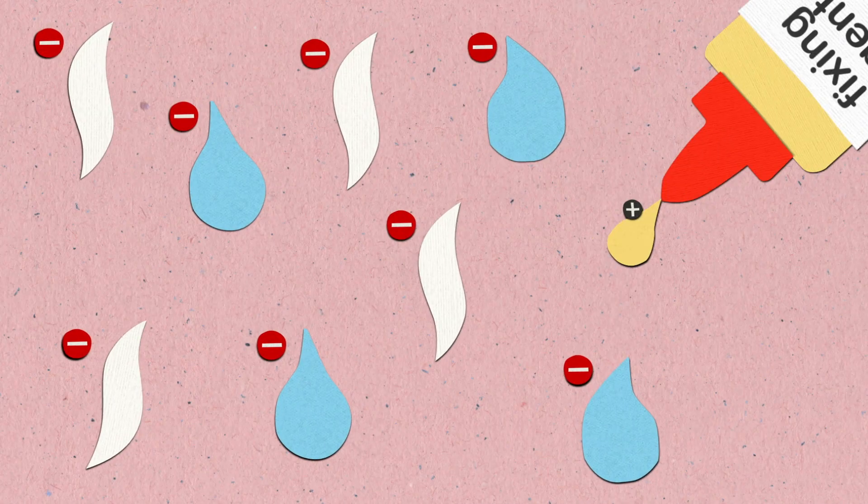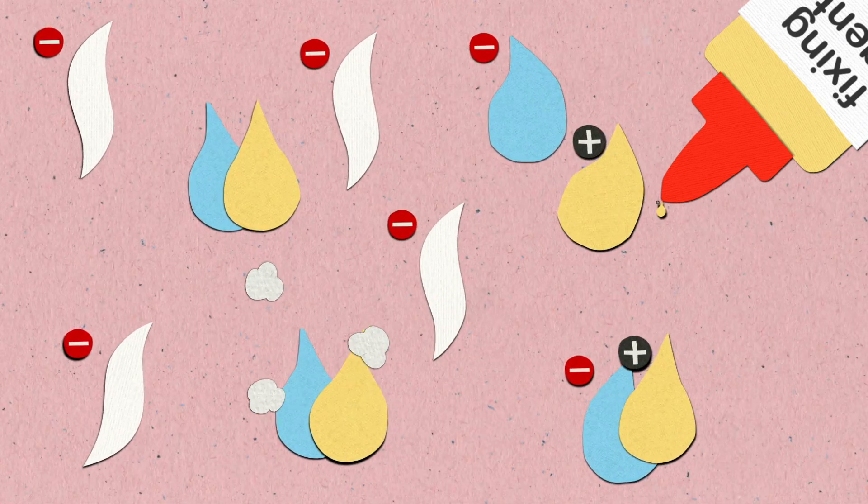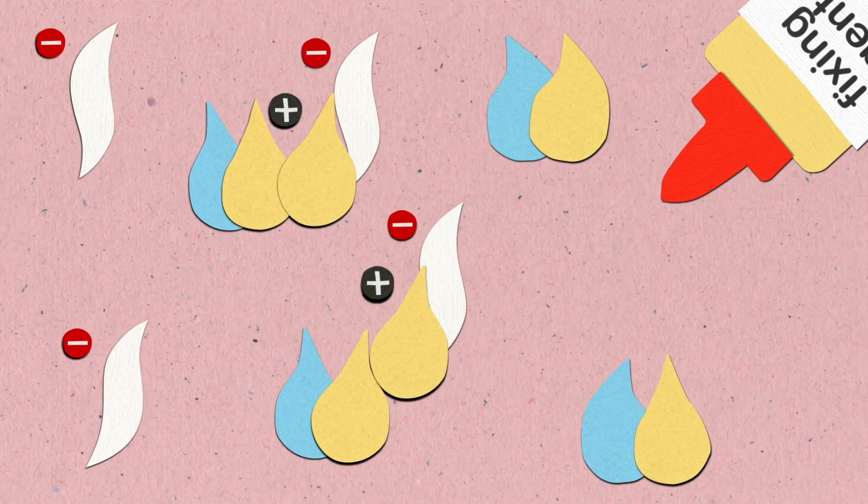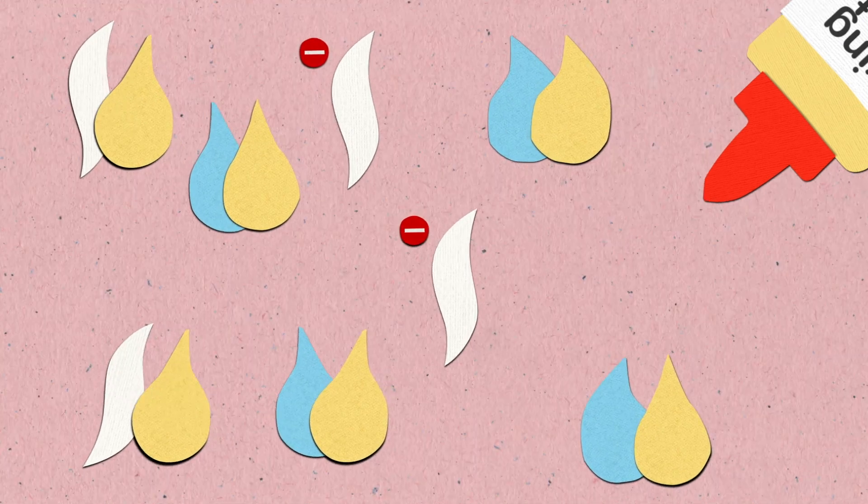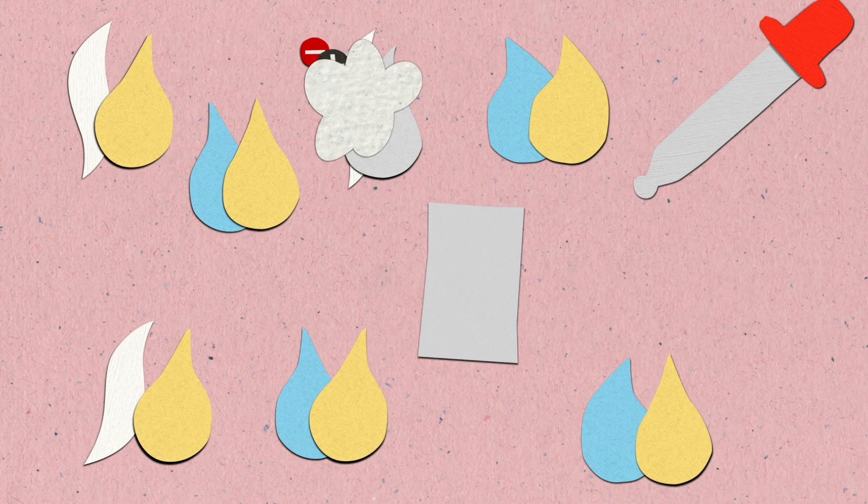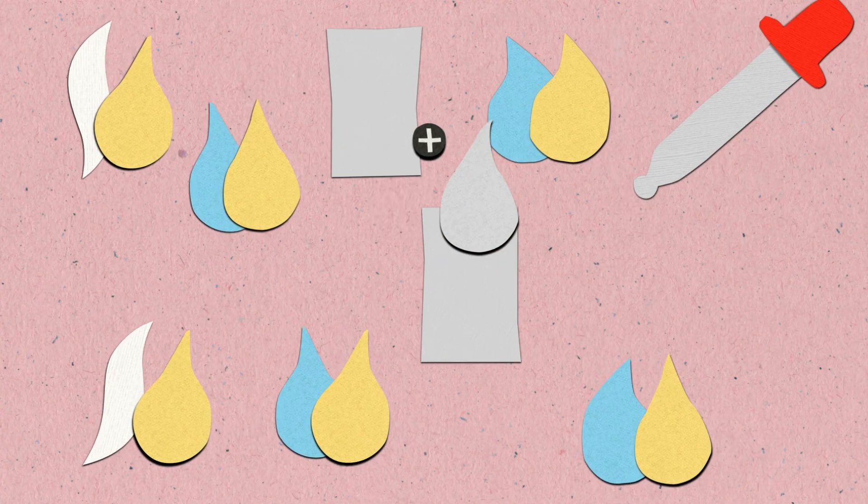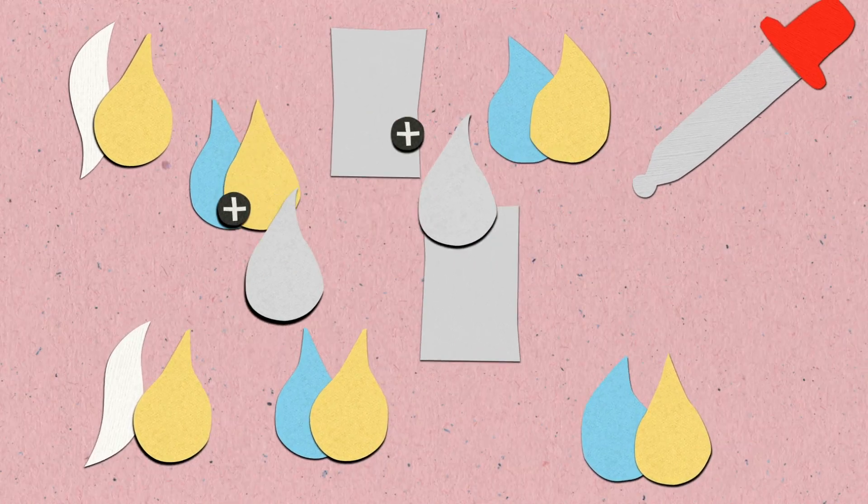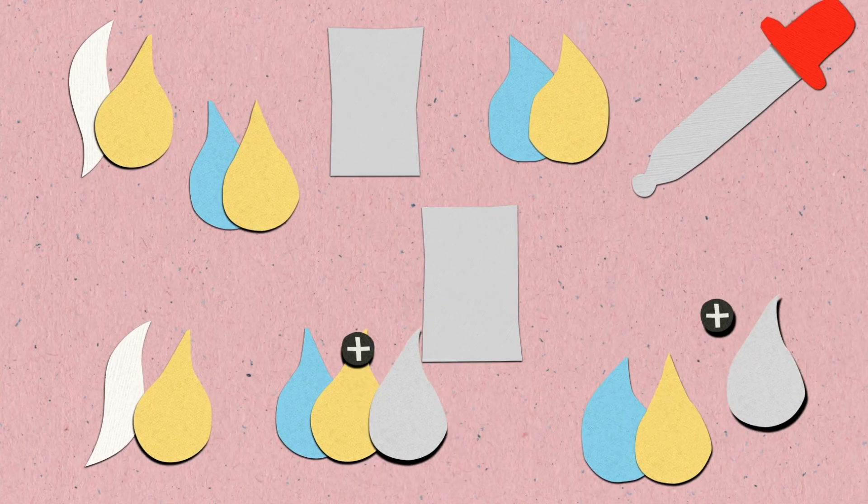Similarly, there can be too much fixing agent added and it will start occupying the fiber charge. This limits the fiber's ability to react with value adding agents. Adding more of such agents might be the solution, but if the fibers are already charge saturated, benefits will disappear.